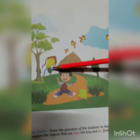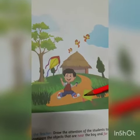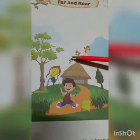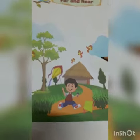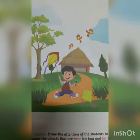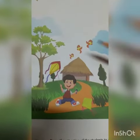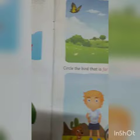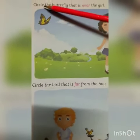Now look at the picture. Here is a boy. This kite is far from the boy, and this kite is near to the boy. You can see in the picture — these birds are far from the boy, and this heart is also far from the boy.